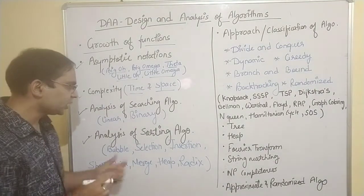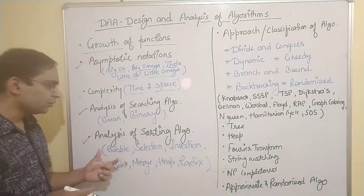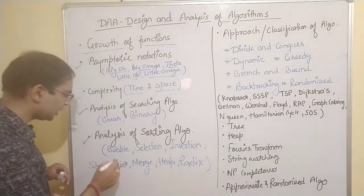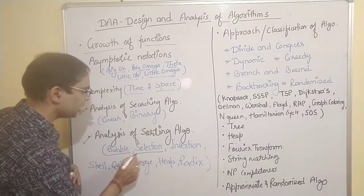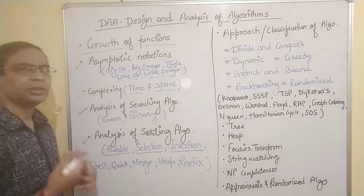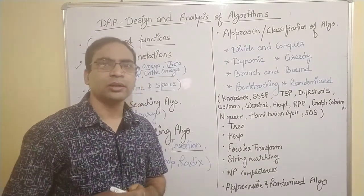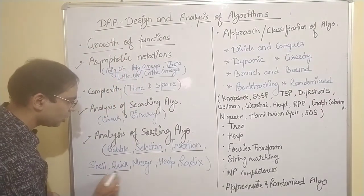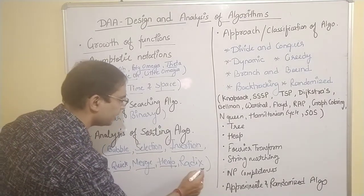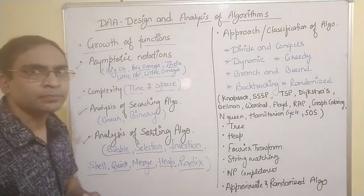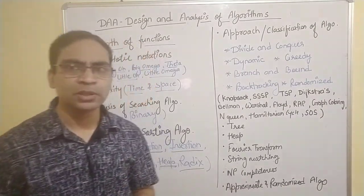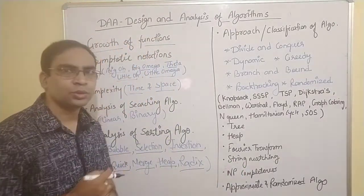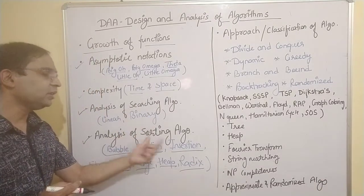Similarly, we will also analyze sorting algorithms. We have two categories: basic sorting algorithms and advanced sorting algorithms. In the basic category we have bubble sort, selection sort, and insertion sort. In the advanced category we have shell sort, quick sort, merge sort, heap sort, and radix sort. We will learn all these algorithms and analyze them for performance in best, average, and worst cases with the help of asymptotic notations.